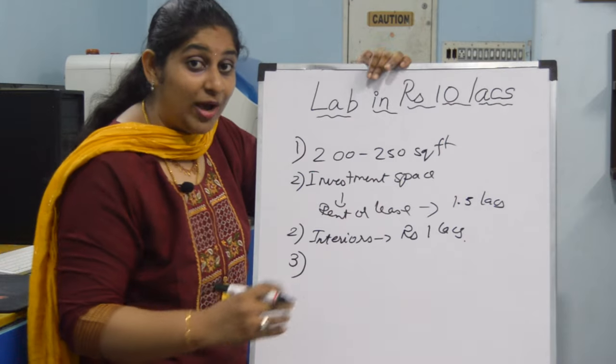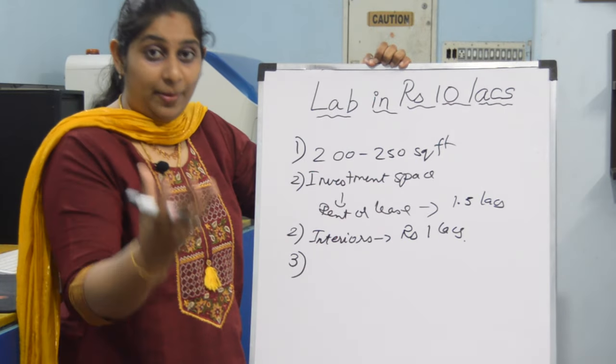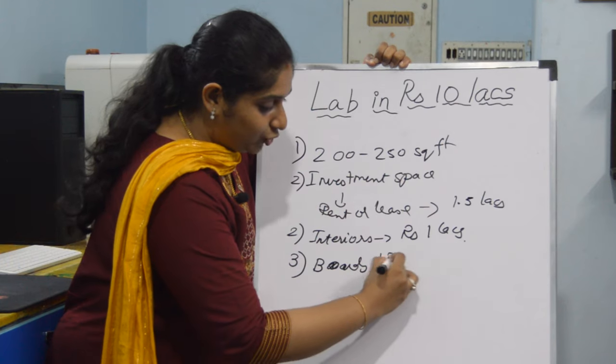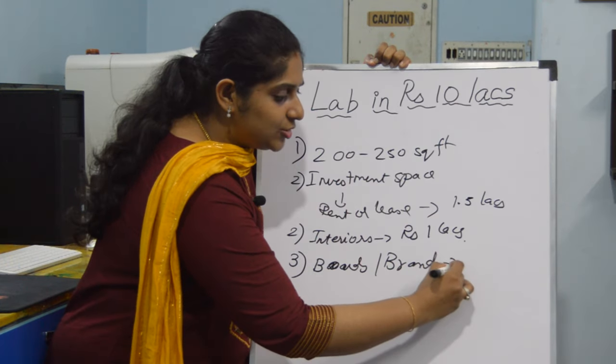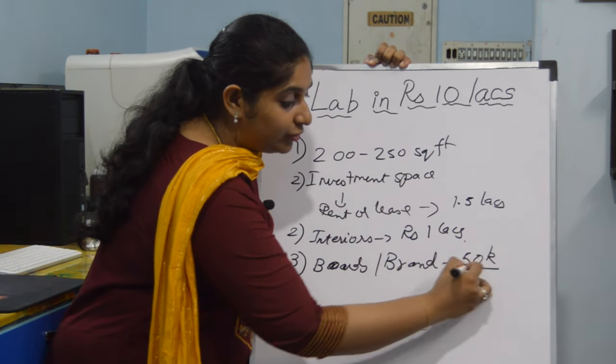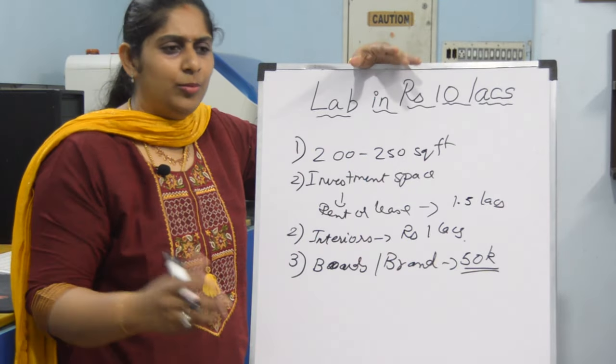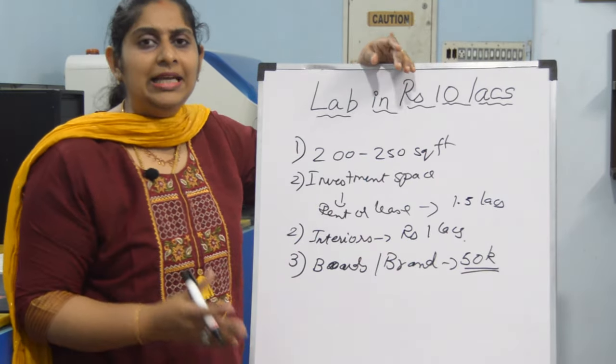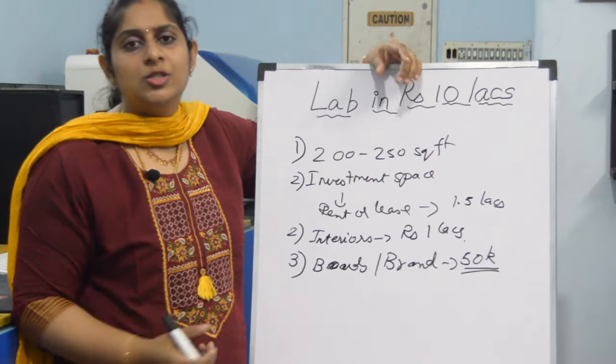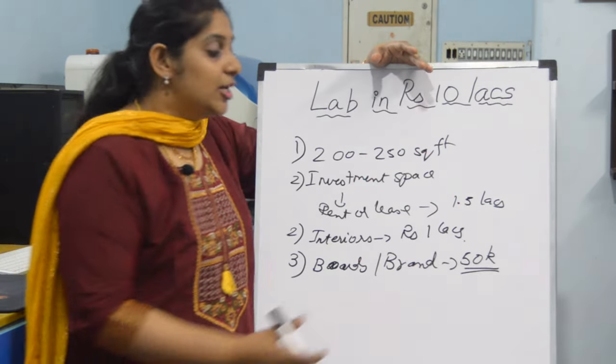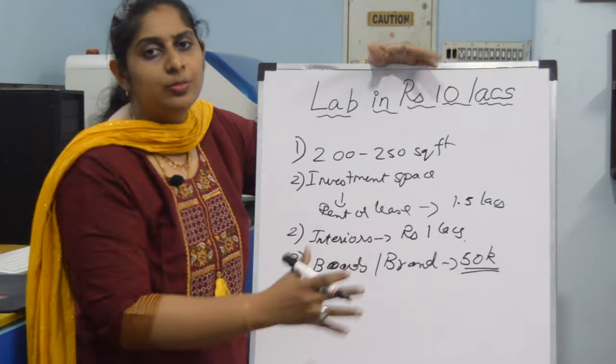So once you have done that, you have to build your brands for that. You need the LED boards, you need to design your brand. And for this, you have to keep an investment of around 50,000 rupees because a small LED board, even a five by five LED board, good bright colors with the designing would be costing you around 35 to 40,000 rupees. So you have to set out around 50,000 rupees for that.